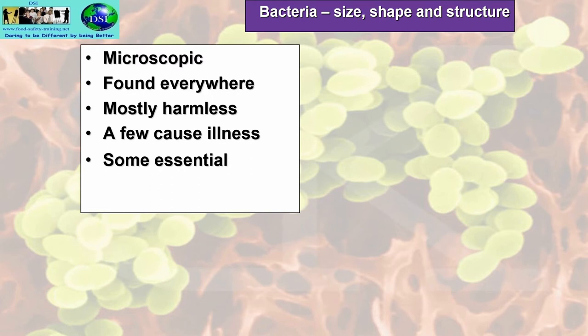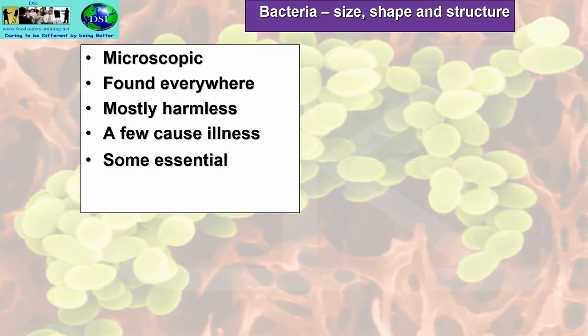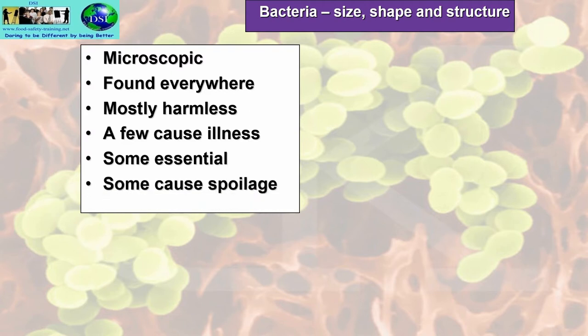Some are essential. From a biotechnology point of view, we need them in the soil to break down dead and decaying vegetation and animals. We use them in composting. E. coli, for example, is used as the source for non-human insulin, which we use for injecting into people with type 1 diabetes. We also use bacteria to dissolve oil spillages at sea. Some cause spoilage — we'll look at spoilage bacteria later on.